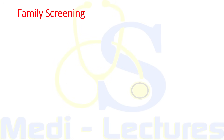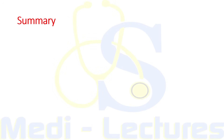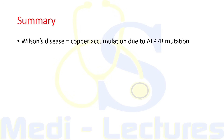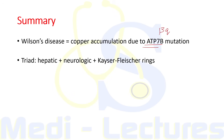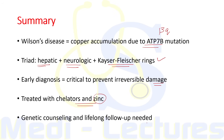Since Wilson's disease is genetic, family screening is important. Siblings of confirmed cases must be screened with serum ceruloplasmin and urinary copper, and if suggestive, genetic testing is done if the index mutation is known. To summarize: Wilson's disease is copper accumulation due to mutation in ATP7B gene on chromosome 13q. It presents as a triad of hepatic, neurological, and ophthalmic features like the KF ring. Early diagnosis is critical to prevent irreversible damage. Treatment involves chelators and zinc for maintenance, with genetic counseling and lifelong follow-up needed.